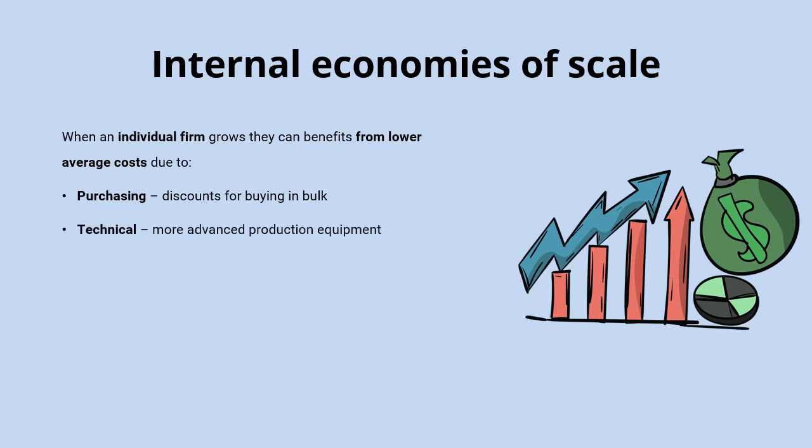They might also benefit from technical economies of scale, which is where they benefit from the use of more advanced production equipment. Production line technology, machines, and automation means those businesses can produce more output in less time, making them more efficient so their cost per unit comes down. Their total cost will be much higher because of the equipment, but the cost per unit on such a large scale will fall.